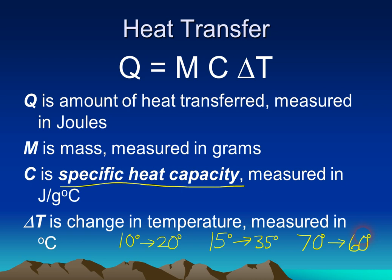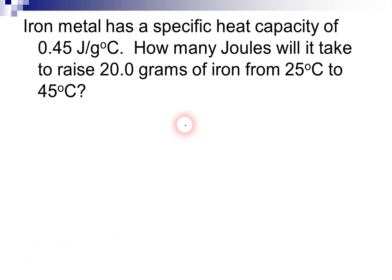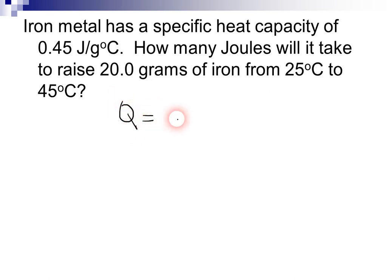We're going to use these values — the Q, M, C, and delta T — and we're going to plug those into the equation to solve for an unknown value. Here is the example we're going to use: we have iron metal with a specific heat capacity of 0.45 joules per gram degree Celsius. The question is, how many joules will it take to raise 20.0 grams of iron from 25 degrees Celsius to 45 degrees Celsius? We're going to use the equation Q equals MC delta T.